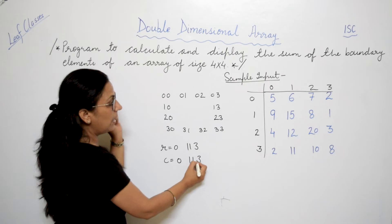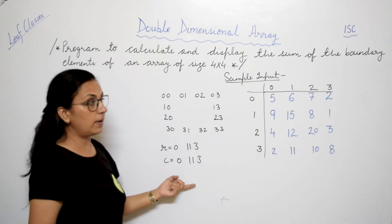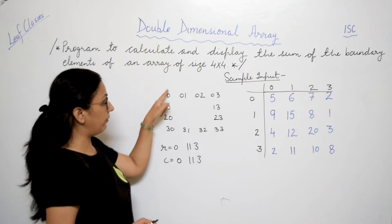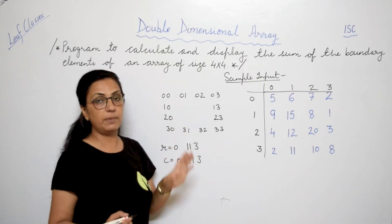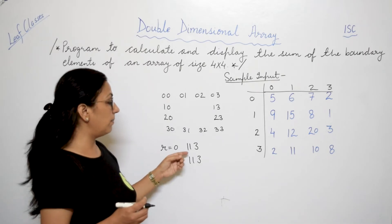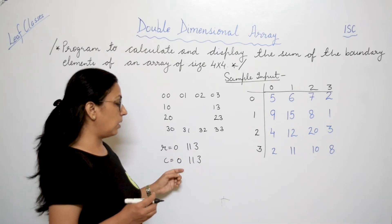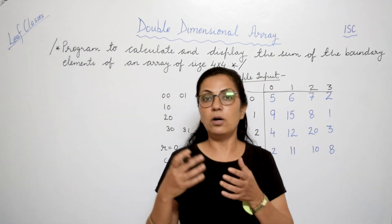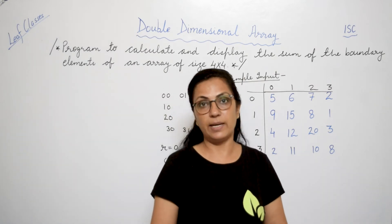So we have observed this pattern from this: either our row number is 0 or row number is 3, or column number is 0 or column number is 3. So if there is any such value in which row number is 0 or 3, column number is 0 or 3, then we have to access those elements and calculate their sum and display it.